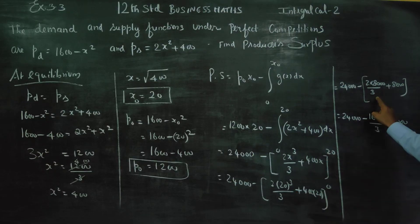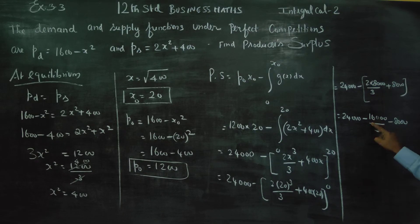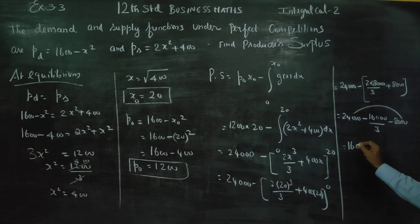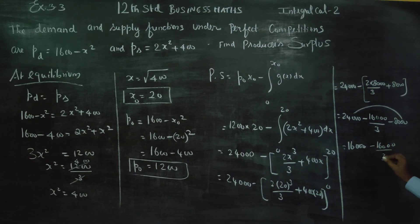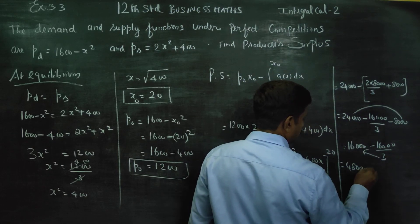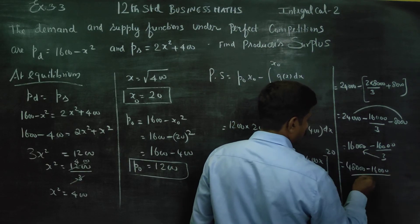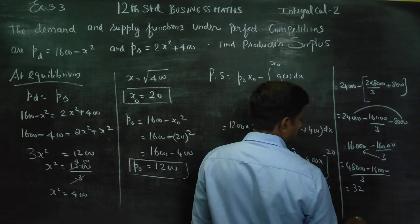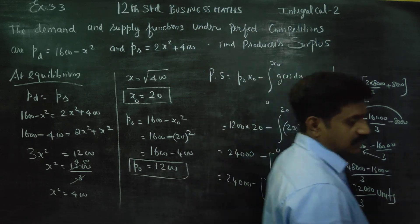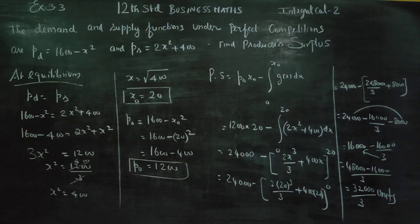Continuing the calculation: working through the arithmetic with LCM, we get 48. Then minus 14000 by 3. Taking LCM and simplifying: 9000 by 3 units. The final answer for producer surplus is 32000 by 3.